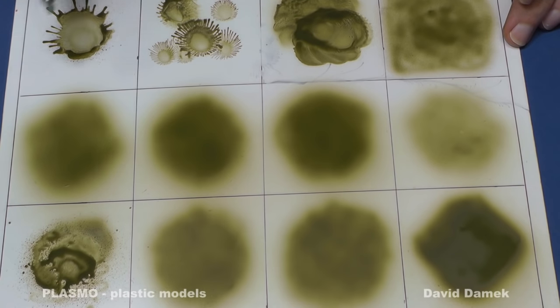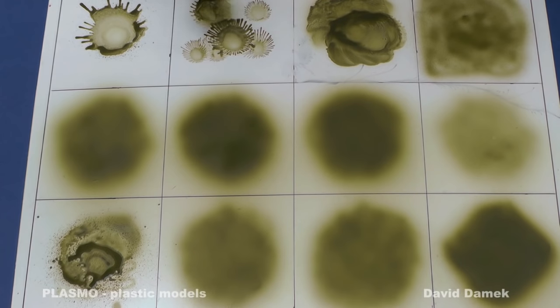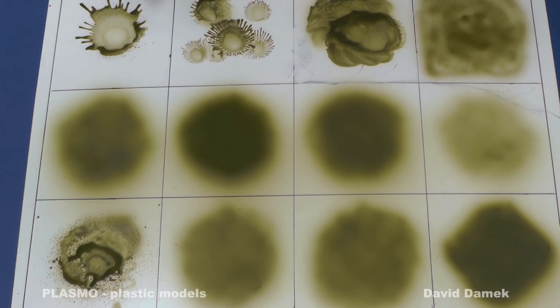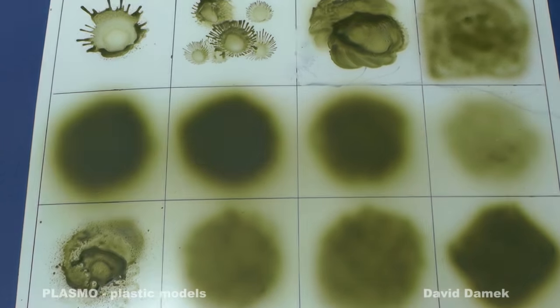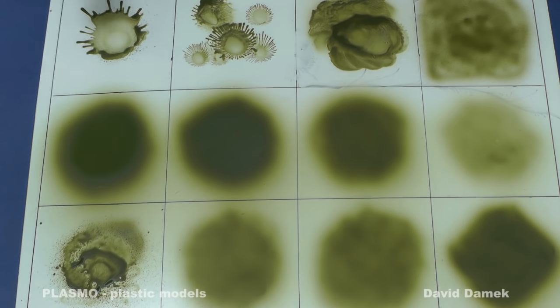The second layer already partially covers the gray plastic. The third layer should already be the final one, but it's still not fully opaque. Only the fourth finishing layer coats everything properly.